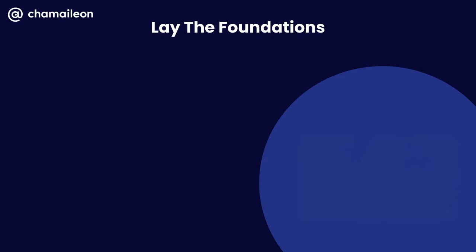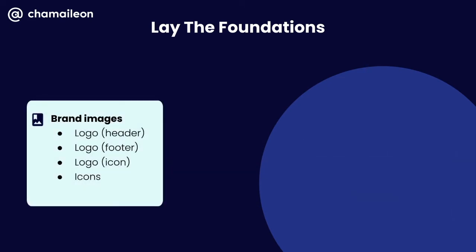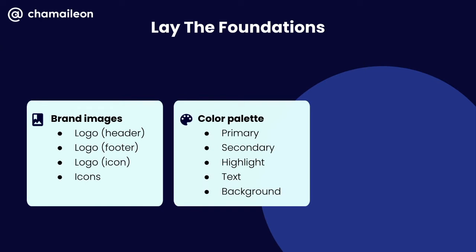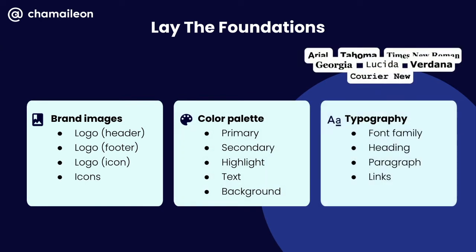As a next step, lay the foundations: collect all your brand-specific image assets such as logo variations and icons, then define your color palette for key elements, highlights, backgrounds, and text. When it comes to fonts, clarify your preferred font family for headings, paragraphs, and links — but note that only web-safe fonts work in email clients consistently. If you use a custom font or Google Font, it will only display for readers using iOS, Apple Mail, or Outlook.com. The rest will see a fallback font you need to define clearly in your email code.